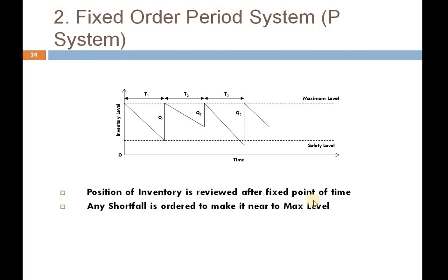Any shortfall is ordered to bring the stock near the maximum level. The quantity we order is decided by the difference between the maximum level and whatever stock is currently available for consumption — that difference is what gets ordered.